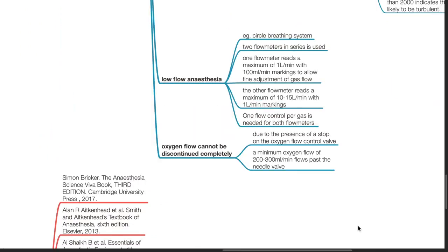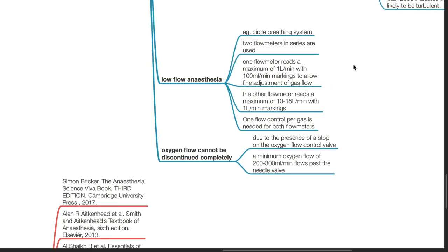Low flow anesthesia, such as in circle breathing systems, two flow meters in series is used. One flow meter reads a maximum of one liter per minute with 100 mls per minute markings to allow fine adjustments of gas flow. The other flow meter reads a maximum of 10 to 15 liters per minute with one liter per minute markings.